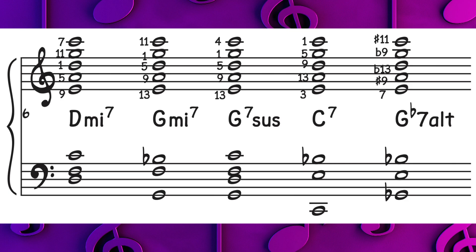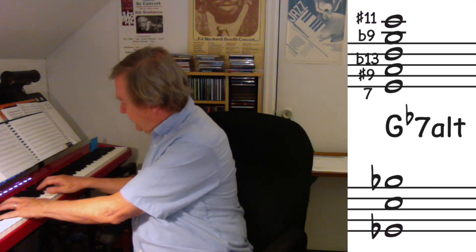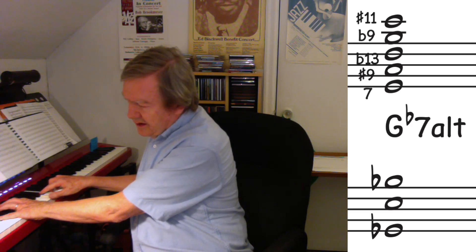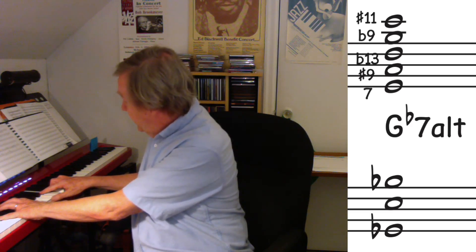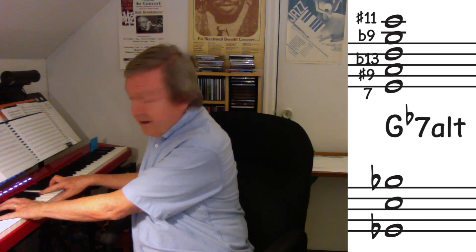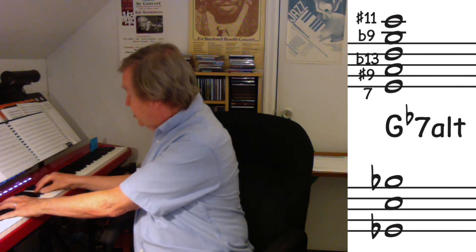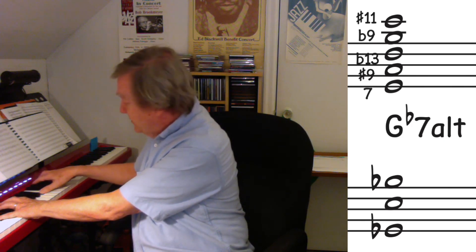But take a look at the last one, the G-flat seven altered. The C pentatonic starts on the sharp 11th. Here's the chord — and there's the C, the sharp 11 or flat five. The D is the flat 13. The E is the seventh of the chord. The G is the flat nine. And the A is the sharp nine. So you have all the alterations in the G-flat seven altered with the pentatonic scale that starts a tritone away from the root of the chord. So that's a very valuable one to be aware of.